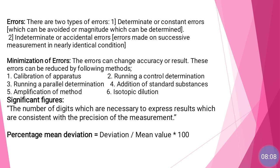When converting 0.346 grams, the leading zero is not significant. The conversion gives 346 mg. So the result 0.346 grams is equivalent to 346 mg. These digits are necessary to express the result, and they are consistent with the precision of the measurement — those are significant figures.